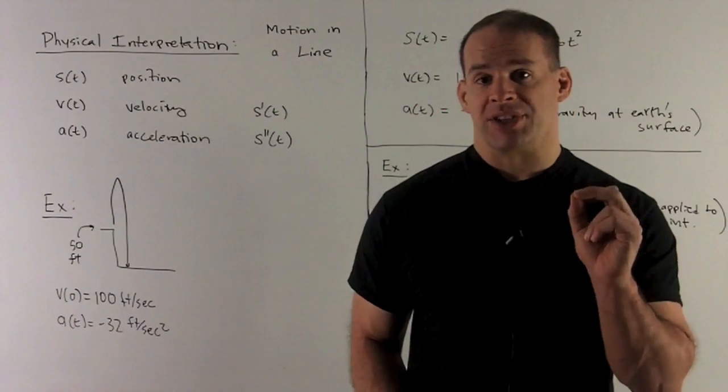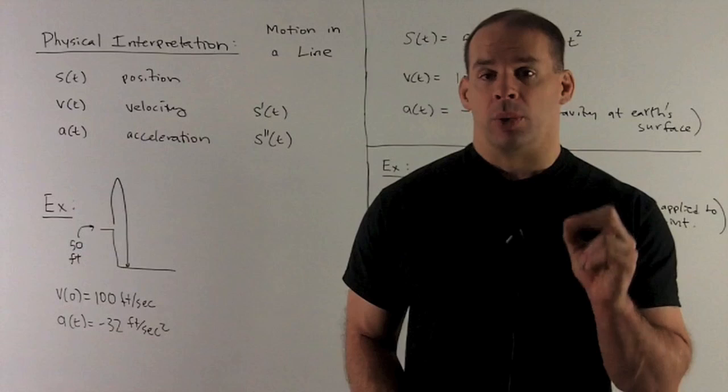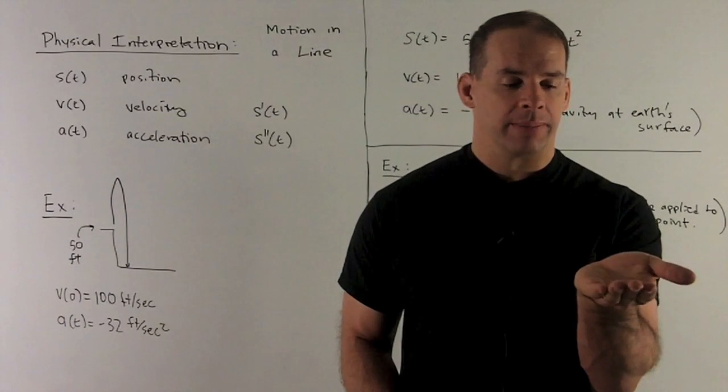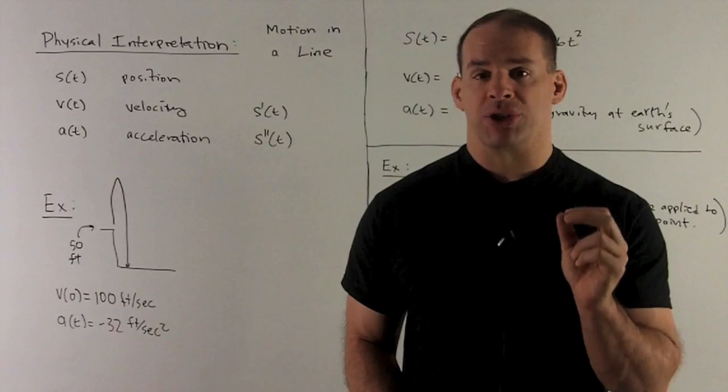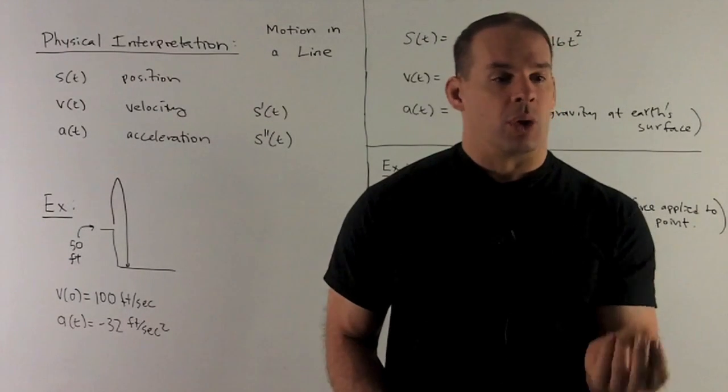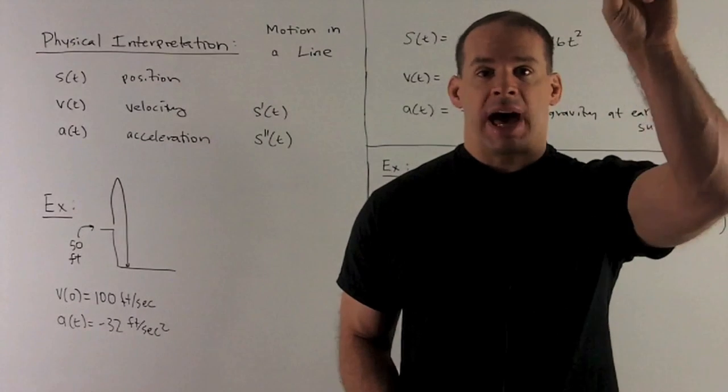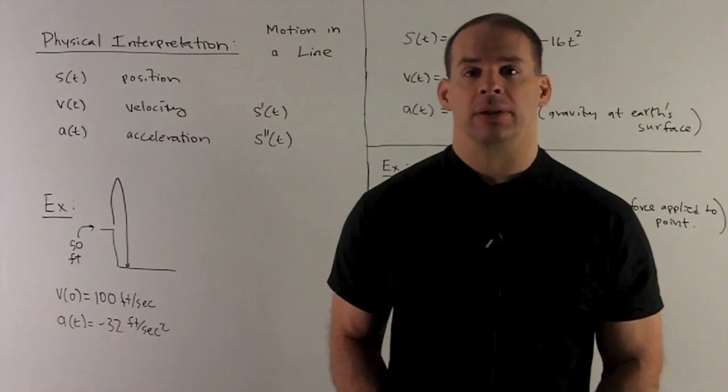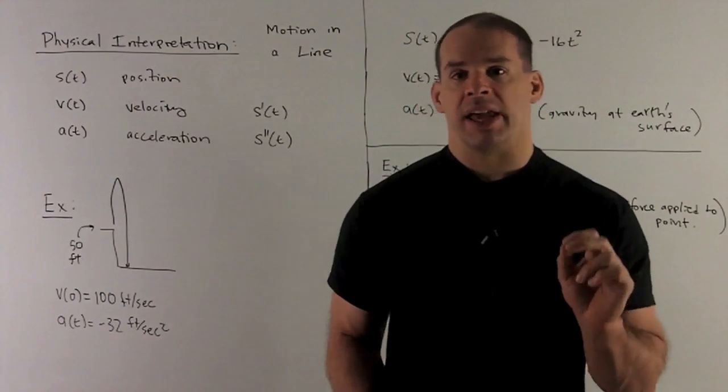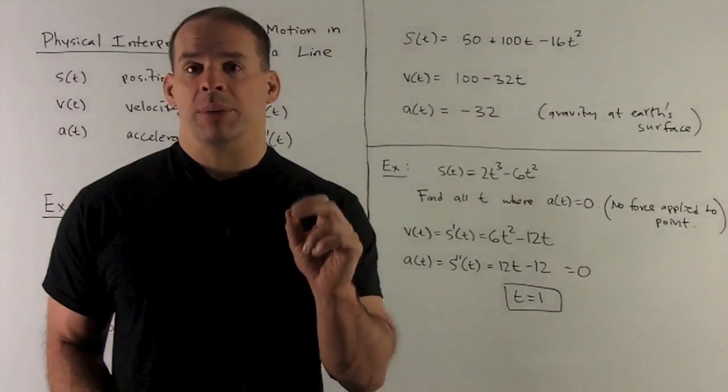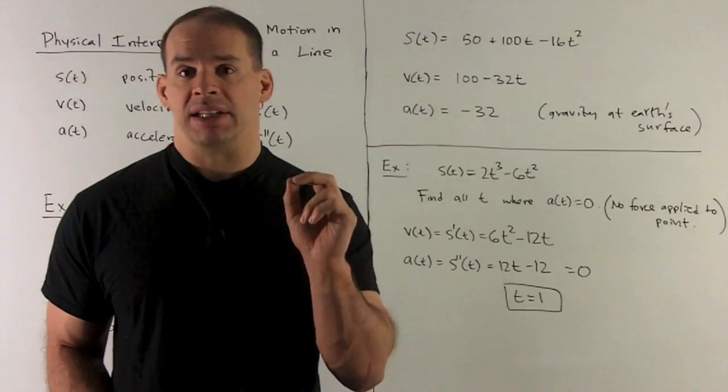Let's look at a basic example. We're going to have a rocket on a platform, 50 feet high. We're going to send it up with initial velocity, 100 feet per second. It's going to go up. Gravity is going to act down on it. So, it's going to go up, it's going to stop, and then it's going to fall back to Earth. In this case, our position function is going to be given by 50 plus 100t minus 16t squared.